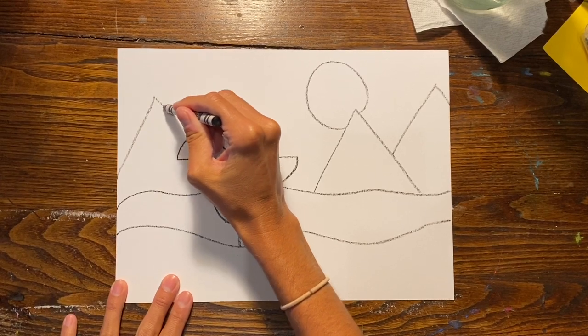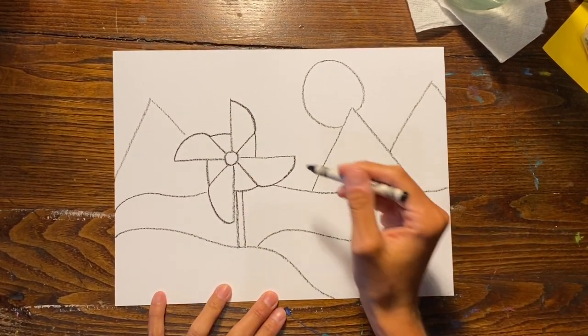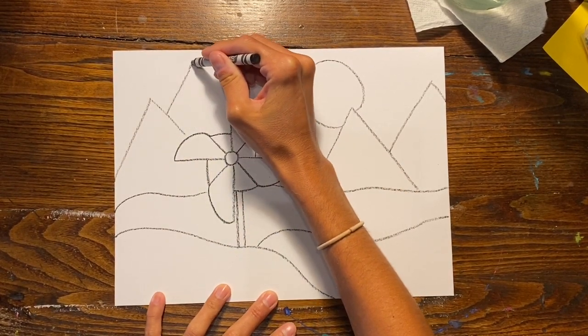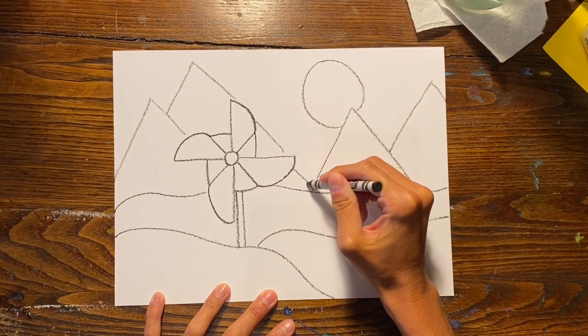I'm going to add some more over here, making sure that I don't draw my mountain lines cutting through my pinwheel because they are in the background so they would not be overlapping on the front of my pinwheel.